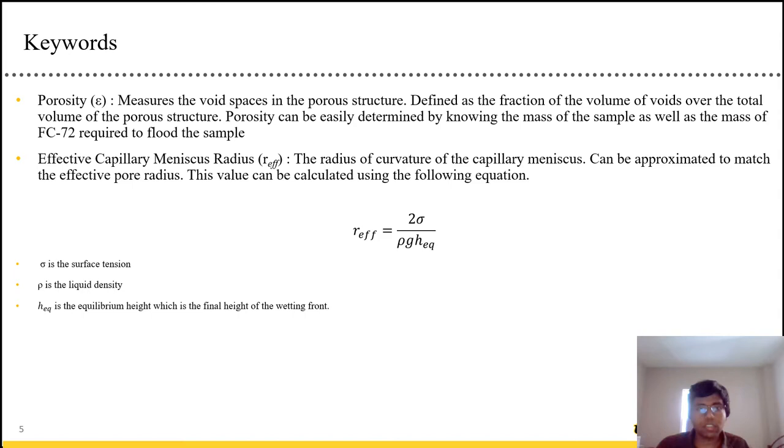Another term is the effective capillary meniscus radius. And this is basically the curvature of the capillary meniscus. It can be approximated to find the effective pore radius and is represented by the blue equation. Sigma here is the surface tension, rho is the density, and h_eq is the equilibrium height, and g is the acceleration due to gravity.